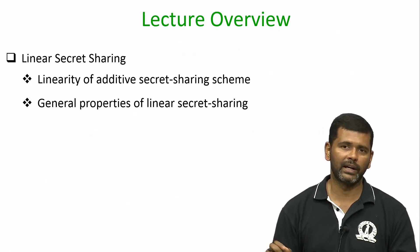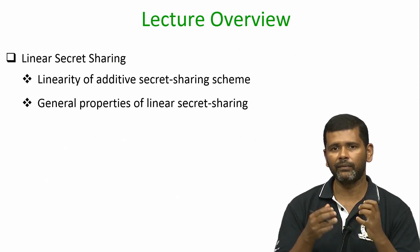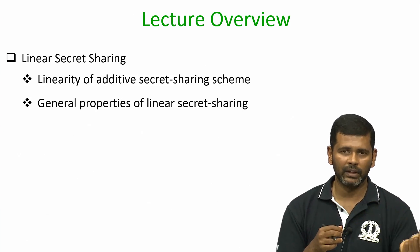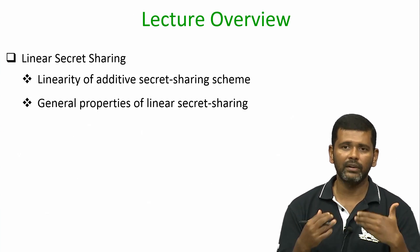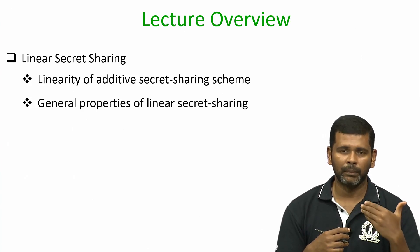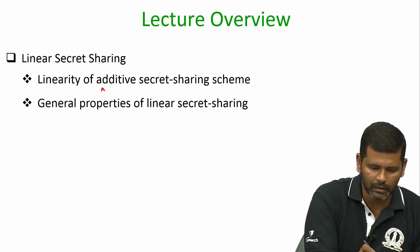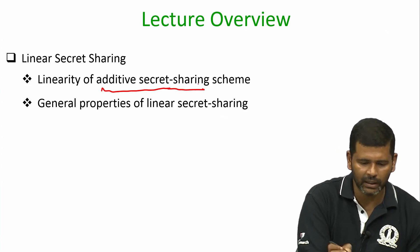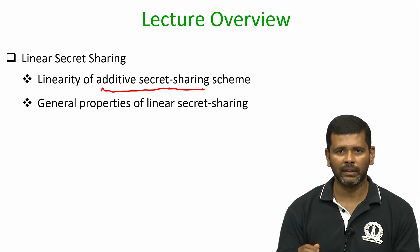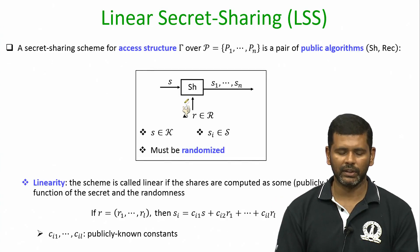In the last lecture we had seen the linearity property of Shamir's secret sharing and some magic associated with it — namely, even without revealing the underlying secret shared values, we can compute any linear function of those secret shared values. We can compute the shares of the result of performing some linear function on the underlying secret shared values. Now in this lecture we will see that even our additive secret sharing scheme, which is an (n-1)-out-of-n secret sharing scheme, also satisfies the linearity property. And then we will wrap up with some general properties of any linear secret sharing scheme, which need not be just additive or Shamir's secret sharing but could be any linear secret sharing scheme.